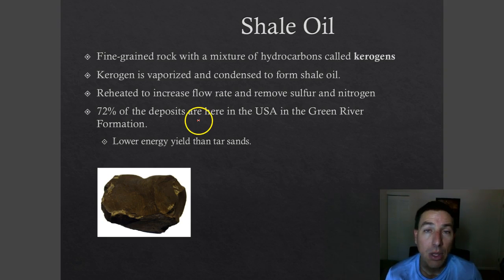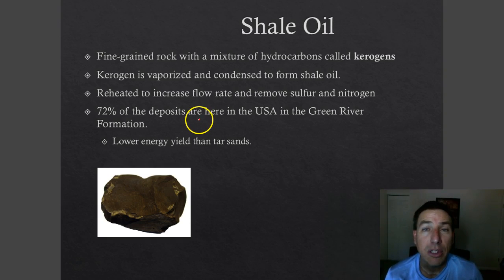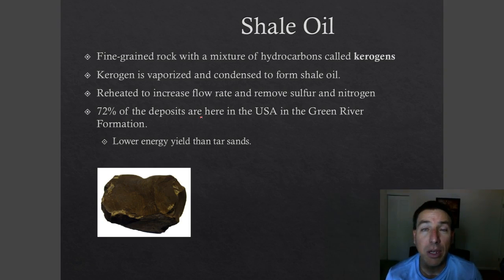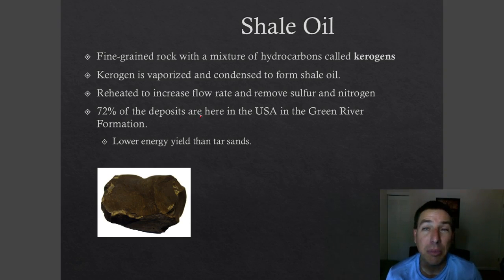The oil and natural gas released by fracking can then be pumped out. Because it's pretty thick, it has to be reheated — usually with hot water or some other chemical — and brought to the surface. Once again, this process produces a lot of CO2 in the manufacturing of shale oil.